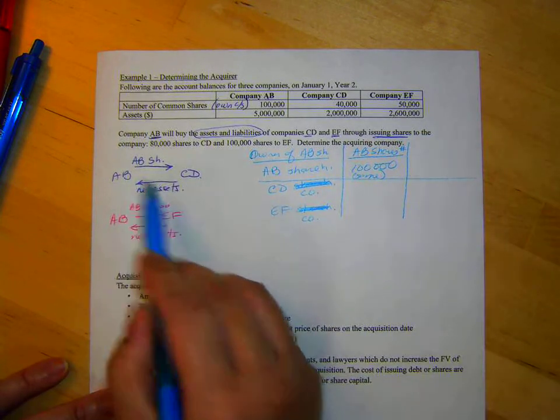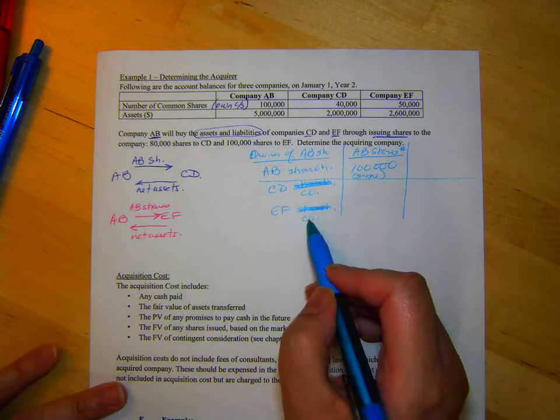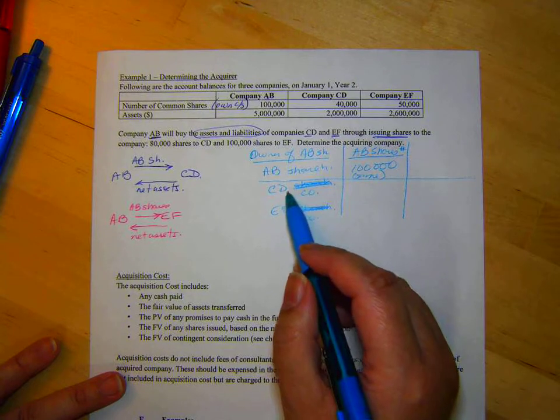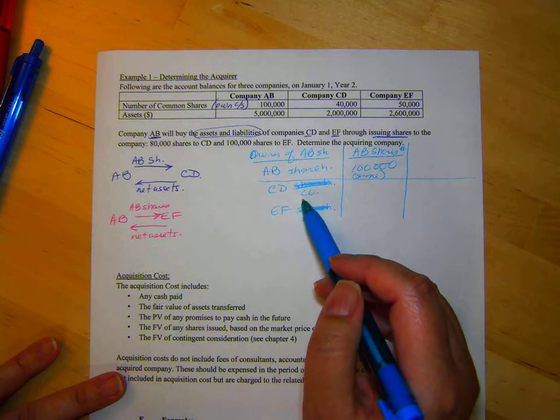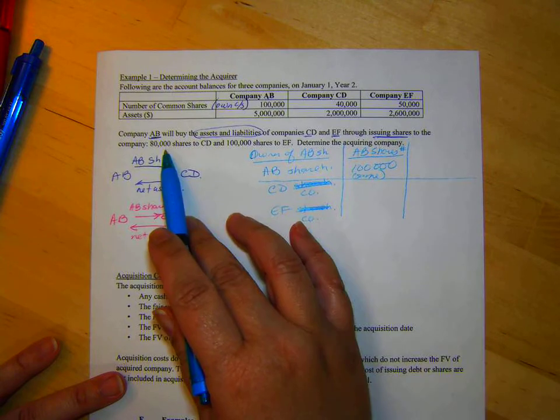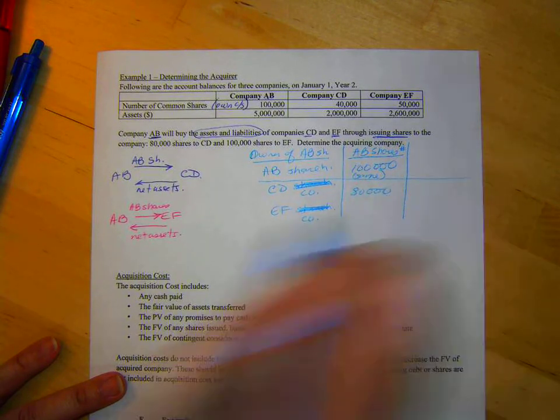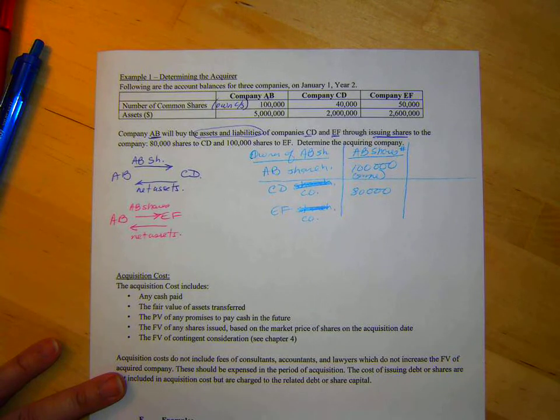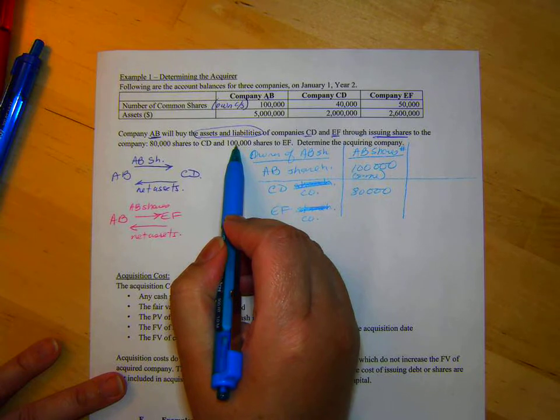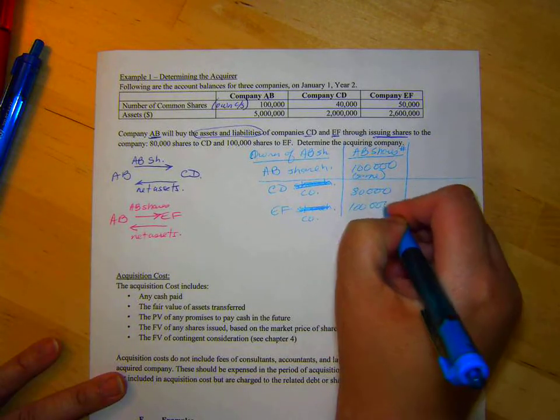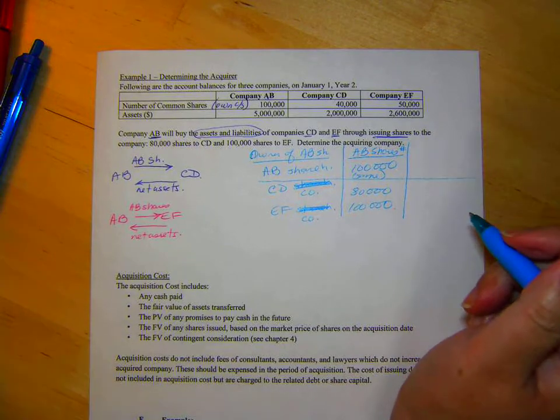CD company, because they're not giving them shares, they're giving them net assets. So, after the acquisition, how many of AB shares does CD have? Well, how many did they get? 80,000. Does that make sense? And EF, after the acquisition, they have 100,000 shares of AB.